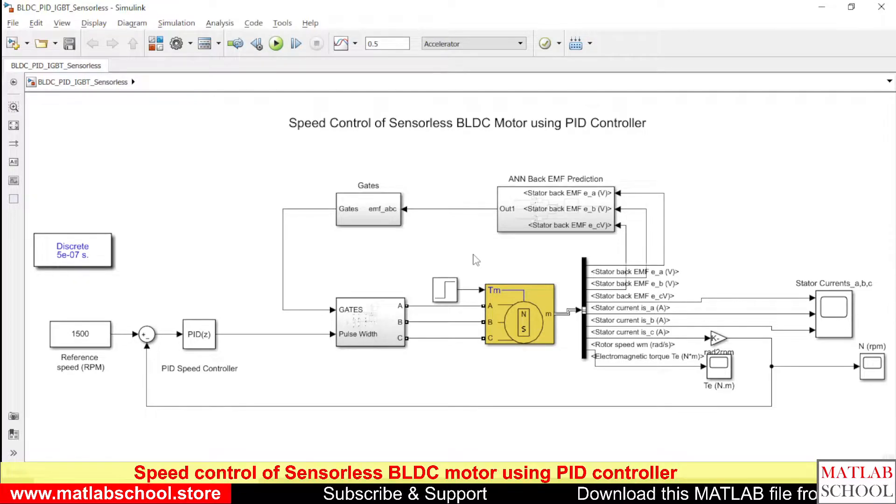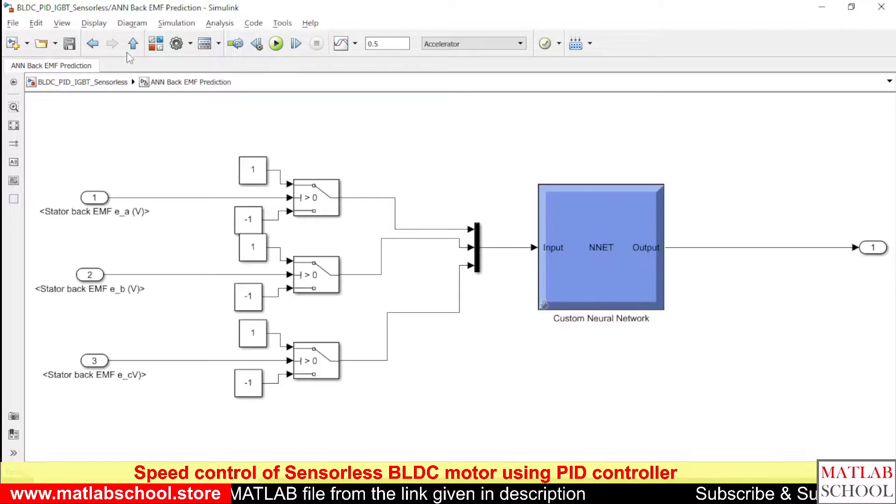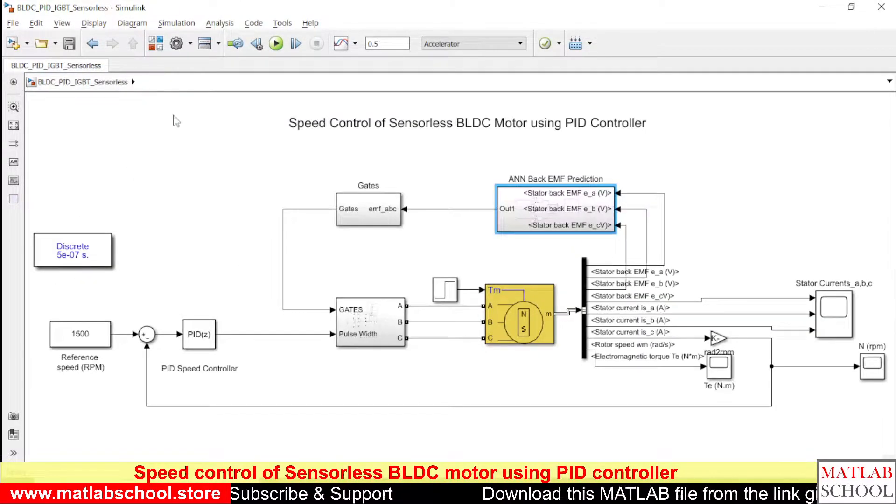So to get the position of the rotor, we will be using the back EMF to predict the position of the rotor. The prediction will be done with the help of ANN model here. So the back EMF will be measured and it will be given to the neural network to produce the corresponding gate pulses.